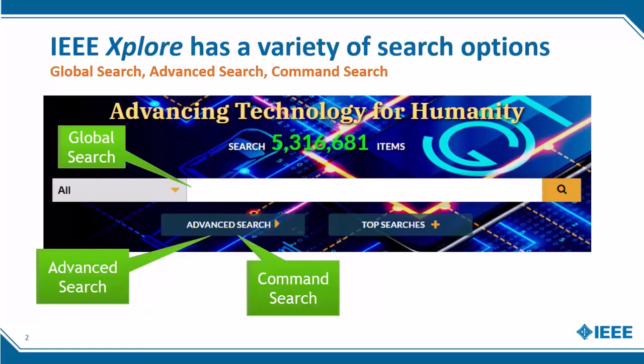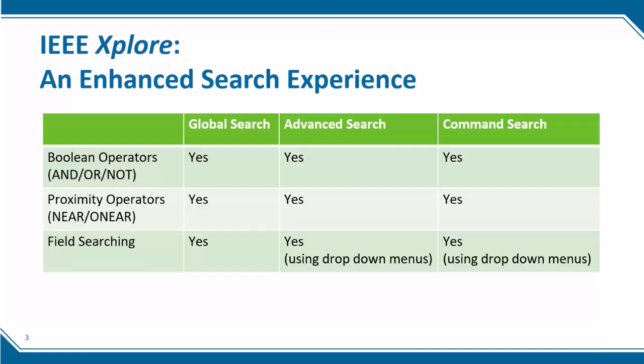The command search is a free-form text box that allows you to do command language searching. All three of these search options provide the ability to search within specific fields, such as the abstract and index terms, as well as support the use of Boolean operators — AND, OR, NOT — and proximity operators NEAR and ONEAR.